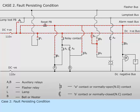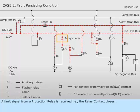Case 2. Fault persisting condition. A fault signal from a protection relay is received, that is, the relay contact closes.